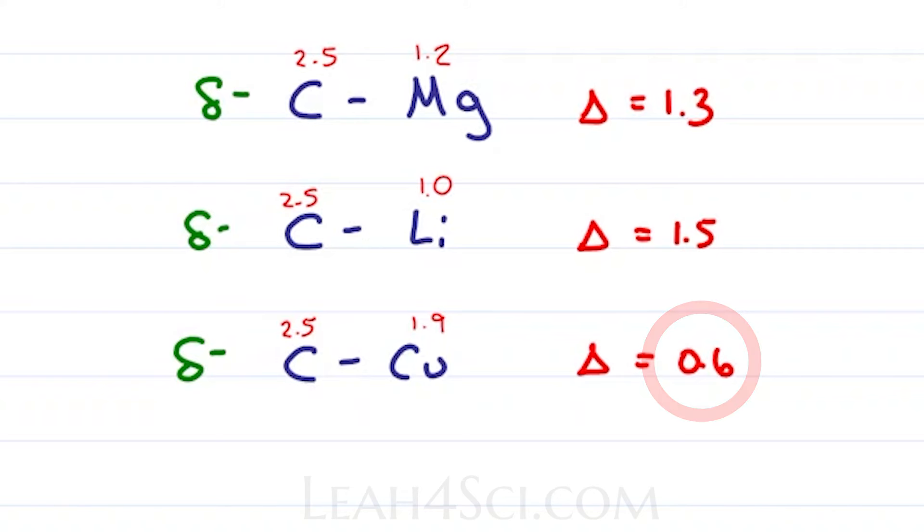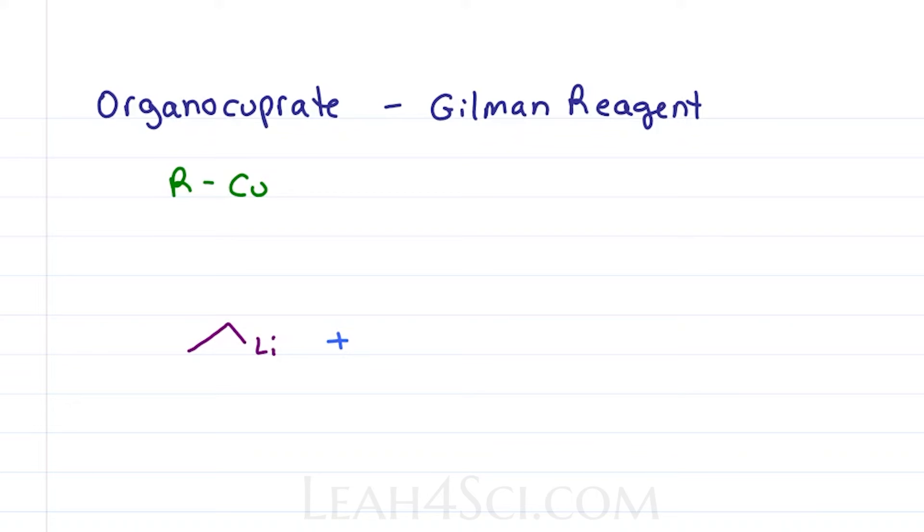In fact, copper is so slow to react that to even make this, we need to start with a stronger organometallic, you guessed it, organolithium. If I take my organolithium and I react it with copper iodide, I get what is called a transmetallation reaction where the metals swap places.